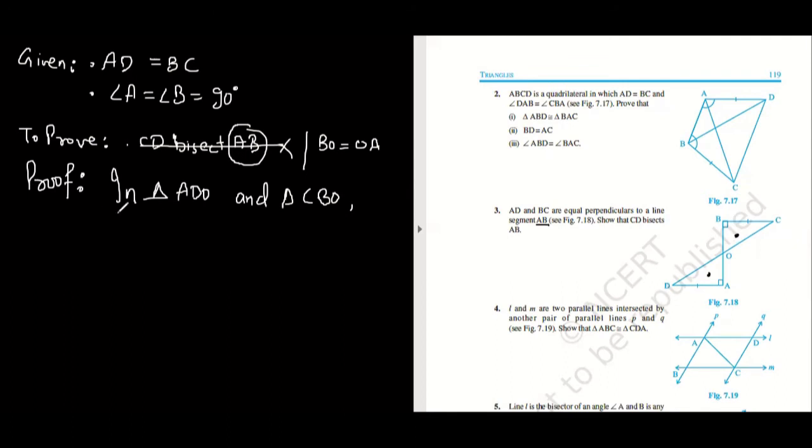So first thing is given: AD equals BC. Angle A equals angle B—we will write 'given' here, 'given' here. Here I can write each equals 90 degrees. Two things are done. Third thing is important—tell me the third thing.